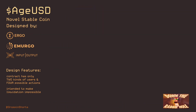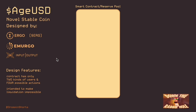It was created by Input Output Global — that's Charles Hoskinson's company that made Cardano — also by Emurgo, who also created Cardano, the Ergo Foundation, and two lead developers over at Ergo from Emurgo and Input Output Global. Some people say Ergo is a kissing cousin of Cardano. Ergo is a proof-of-work smart contract blockchain, whereas Cardano is proof-of-stake. AgeUSD does not run on Cardano — it runs on ERG, the native cryptocurrency of Ergo.